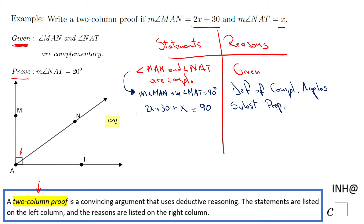The next thing I'm going to do is combine these two like terms. This is an algebraic step within this geometrical proof. From here we get 3x plus 30 equals 90, and the reason for this step is the distributive property.